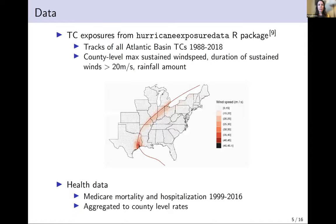The tropical cyclone exposure data we use are publicly available in the hurricaneexposuredata R package, which contains detailed track and feature information for all Atlantic basin tropical cyclones for about the past 30 years, compiled from US National Hurricane Center data. For each tropical cyclone, the package provides county-level exposure metrics for wind speed, rainfall, flooding, and tornadoes. You can see on the map, for Hurricane Ike in 2008, the track it followed and the wind produced in each county it impacted.